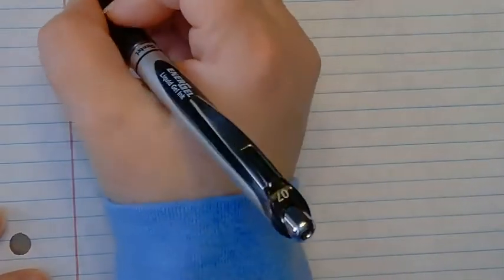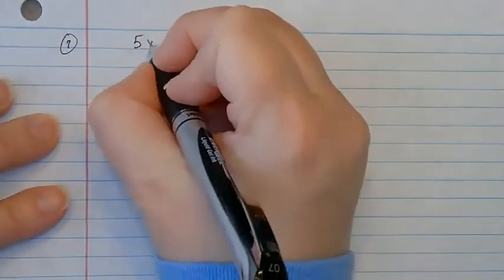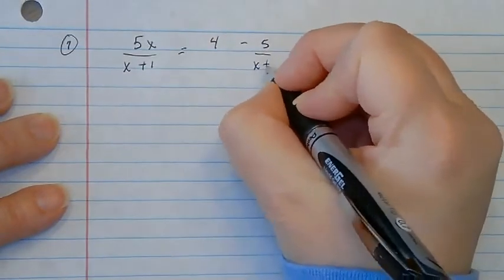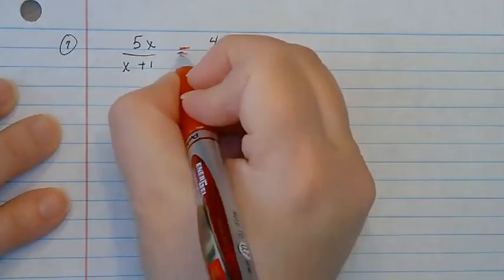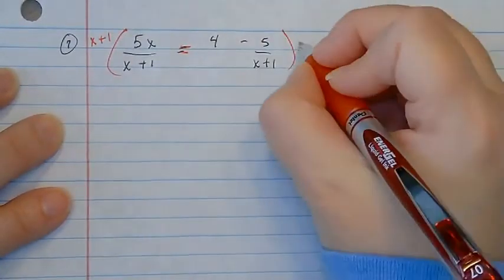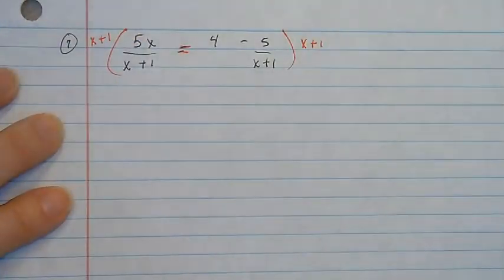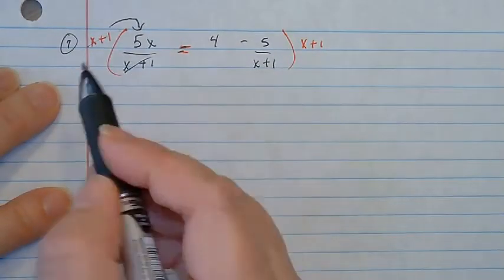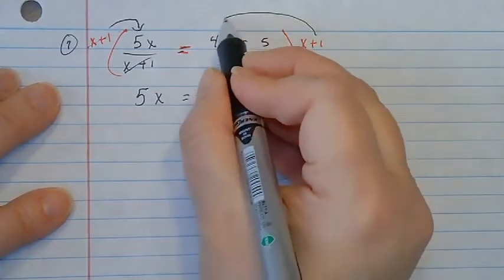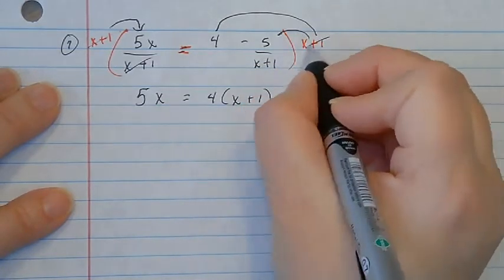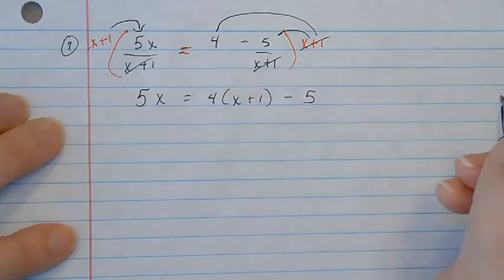Okay, let's do a couple more. This is example 7: 5x over x plus 1 equals 4 minus 5 over x plus 1. I want to take both sides times something that will get rid of the denominator — x plus 1 works for both sides. Starting by distributing: on the left side, the x plus 1 and x plus 1 cancel and I get 5x. When I multiply 4 times x plus 1, it looks like that, and then x plus 1 times the last term cancels, so I just have minus 5. I don't have a fraction anymore.